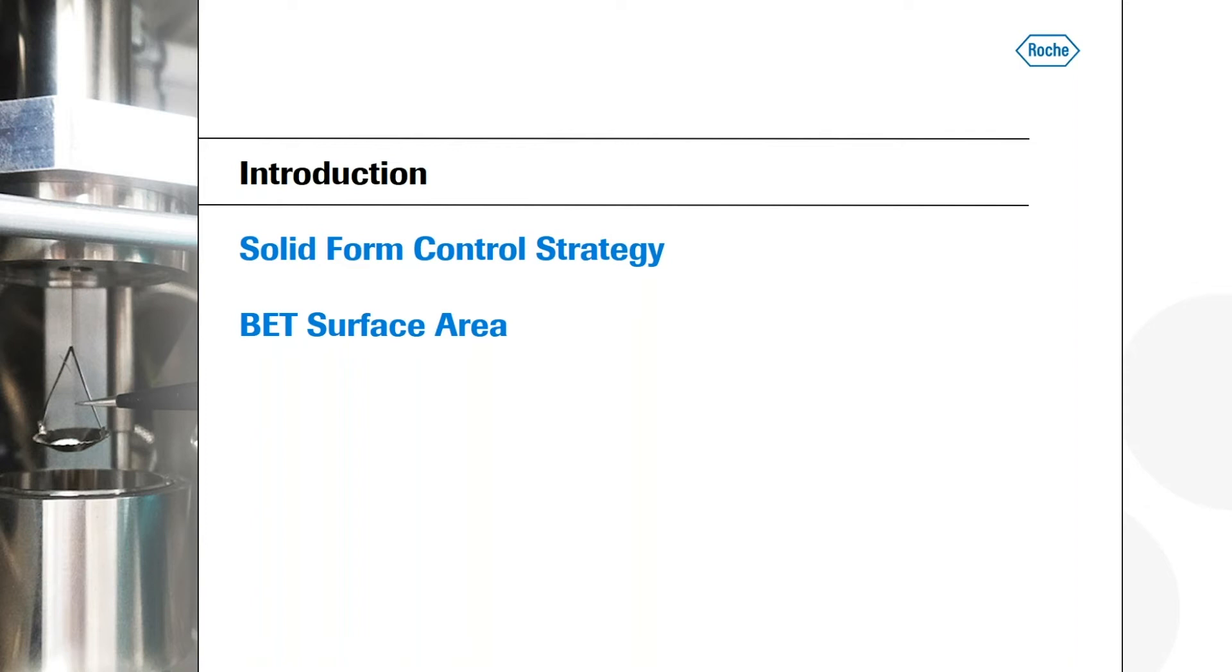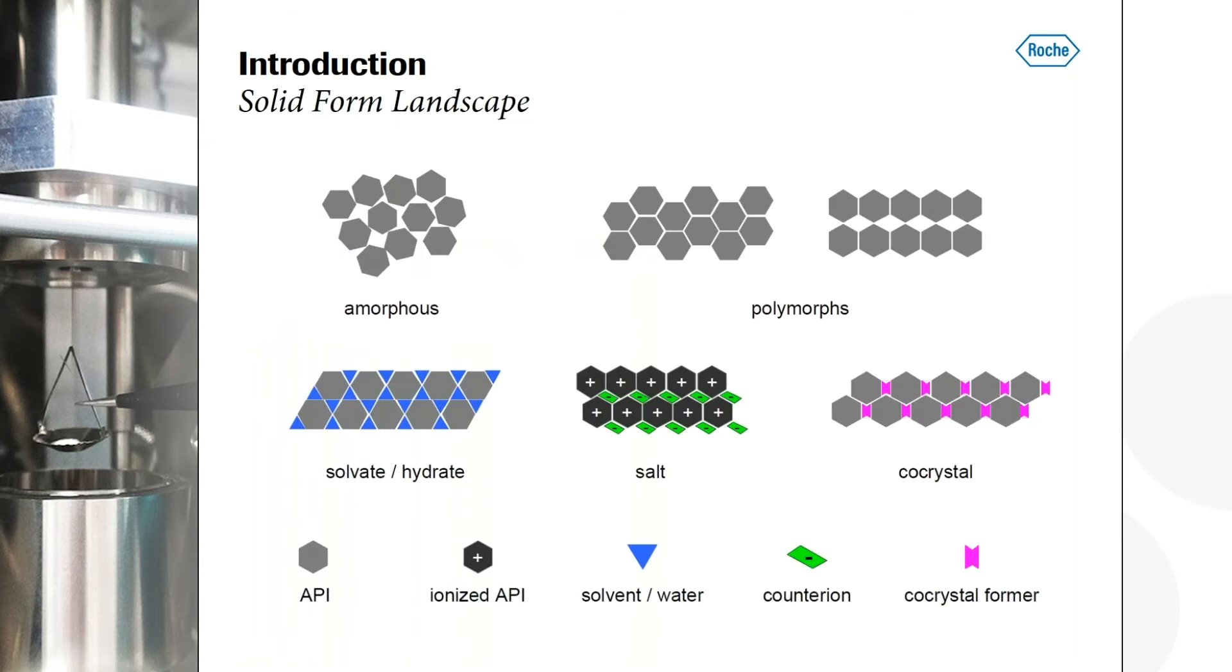And one thing is we start with a look on the solid form landscape. On the first glance, that looks rather simple. You might have some amorphous material, disordered only short-range order maybe, but no long-range order. We talk about crystals and there if we don't have any different component inside the crystal, we talk about polymorphs or different coordinations of the molecules within the crystal structure. This means we have a long-range order compared to the amorphous stuff. We could have solvates or hydrates where we incorporate a second component into the crystal lattice, which is a liquid under ambient conditions, or which could be solid. Then we talk about co-crystals. And if we have ionic species, we talk about salts.